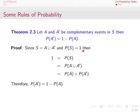By the third axiom, since A and its complement are mutually exclusive and share no common elements, the probability of A union A complement equals the sum of their individual probabilities. Therefore the probability of A plus the probability of A complement equals 1, and we can solve for the probability of the complement to get 1 minus the probability of A.